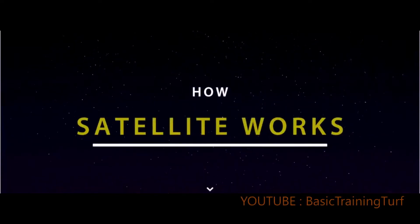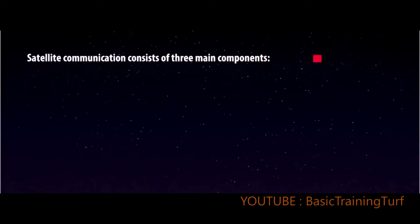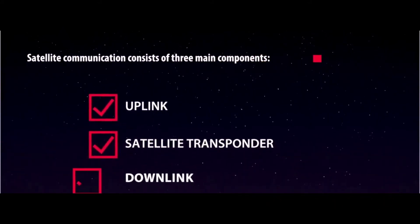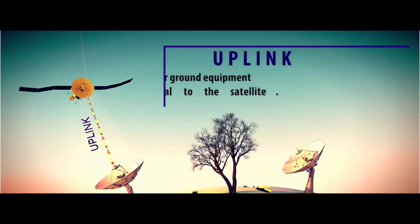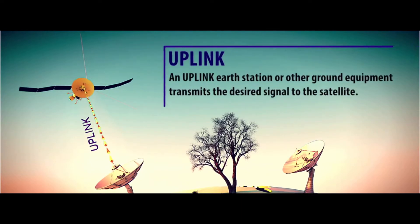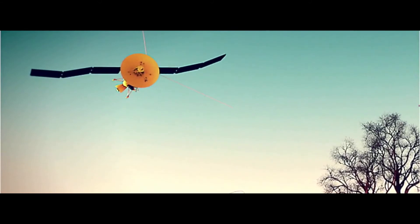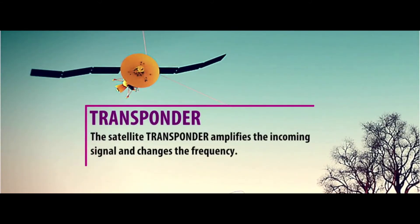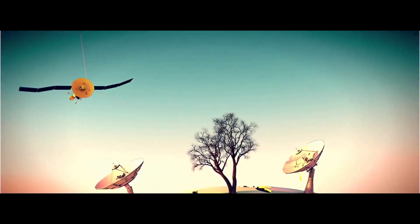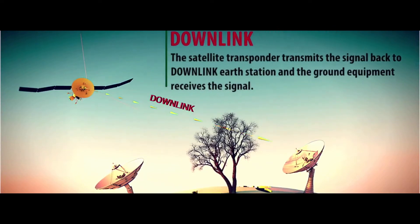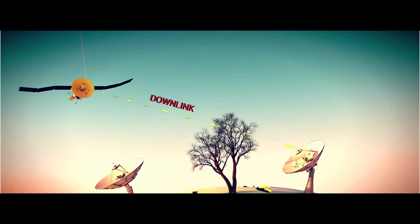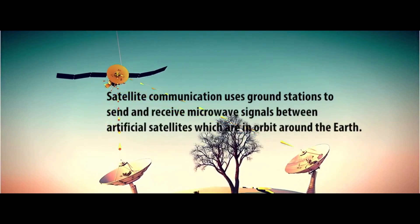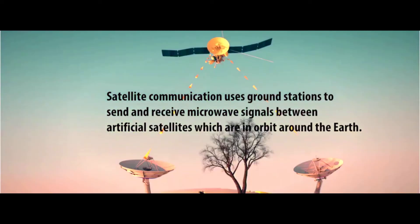How a satellite works: satellite communication consists of three main components — uplink, satellite transponder, and downlink. An uplink earth station or other ground equipment transmits the desired signal to the satellite. The satellite transponder amplifies the incoming signal and changes the frequency. The satellite transponder then transmits the signal back to the downlink earth station, where the ground equipment receives the signal. Satellite communication uses ground stations to send and receive microwave signals between artificial satellites in orbit around the earth.